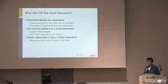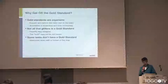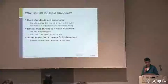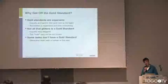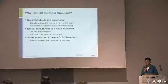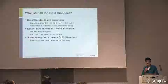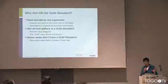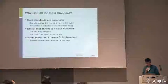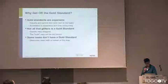So why should we think about getting off the gold standard? Gold standards are expensive. Experts are hard to find and hard to train to the task. Annotation is expensive and time-consuming. Not all that glitters is gold standard — experts disagree, and the truth may not be known. There may not be any so-called ground truth, only a consensus among human experts. Some tasks don't have a gold standard, including interactive tasks with the human in the loop.